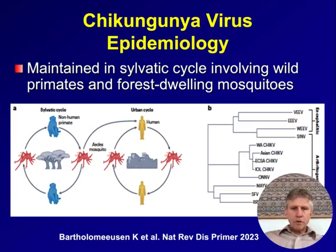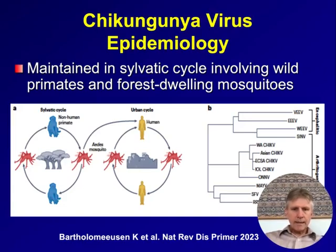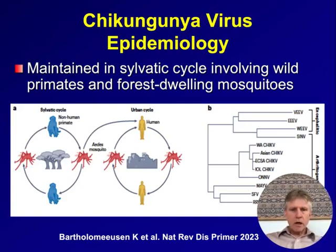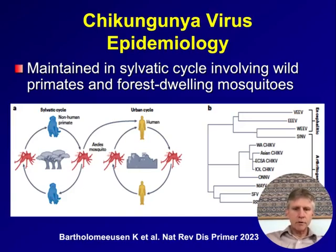The chikungunya virus is maintained in a sylvatic cycle that cycles between forest-dwelling mosquitoes and non-human primates, but it may shift into an urban cycle, which can lead to explosive epidemics. Other alphaviruses that may cause human disease include Ross River and Mayaro virus. Mayaro virus is one we're concerned may cause epidemics in the future in Latin America and the Caribbean.